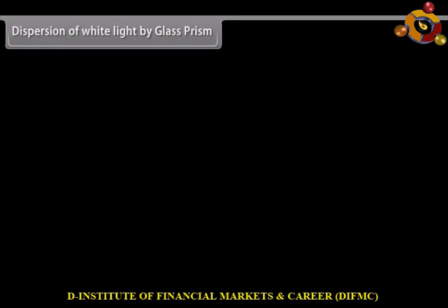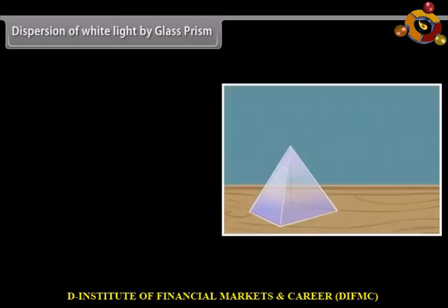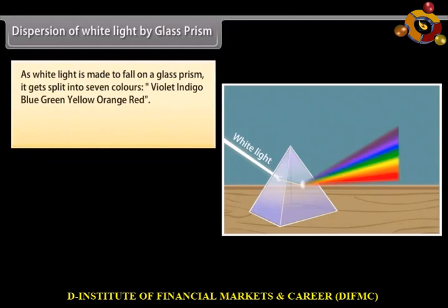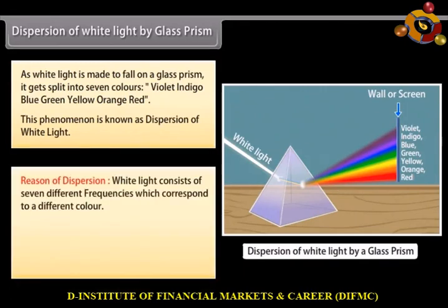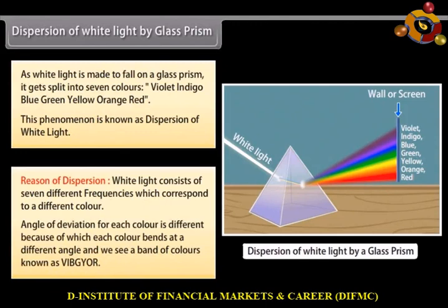Dispersion of White Light by Glass Prism. When white light is made to fall on a glass prism, it gets split into seven colors. This phenomenon is known as dispersion of white light. White light consists of seven different frequencies which correspond to different colors. The angle of deviation for each color is different, because of which each color bends at a different angle and we see a band of colors known as VIBGYOR.